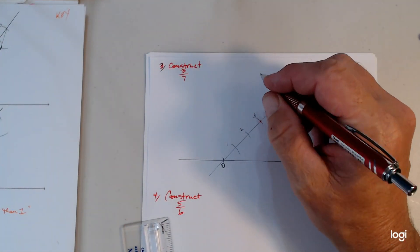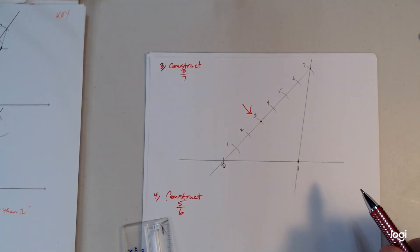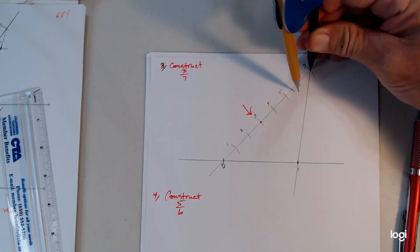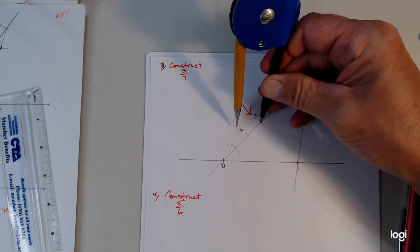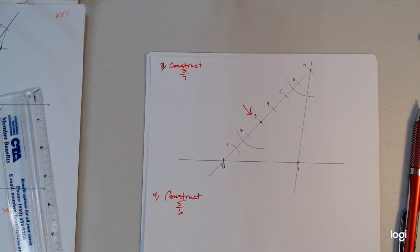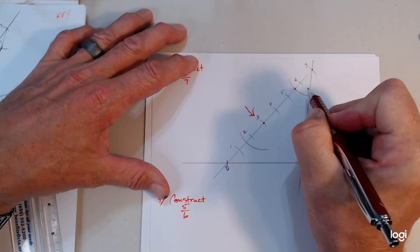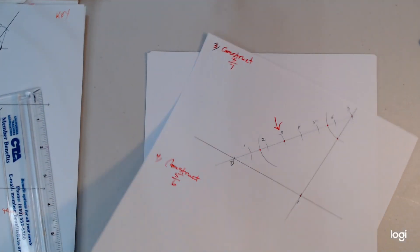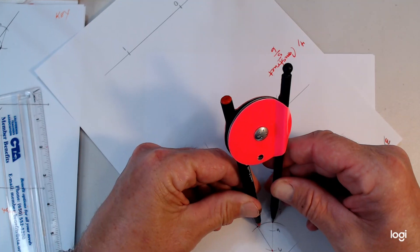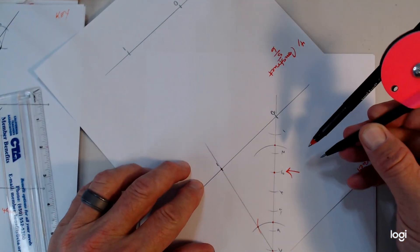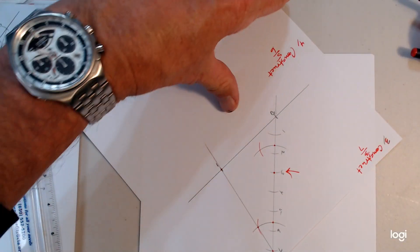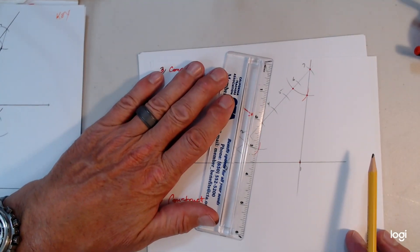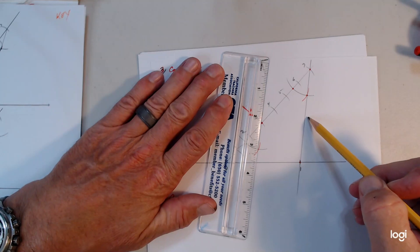I want three-sevenths. So take my compass again, adjust it past the other arcs so you don't intersect them — it gets confusing that way. Come down to the point of interest and do the same thing. Then highlight these points and switch to red so you can see. I'm going to adjust my compass. Now I use the third arc because I want three-sevenths, and it should be parallel to this line right here.